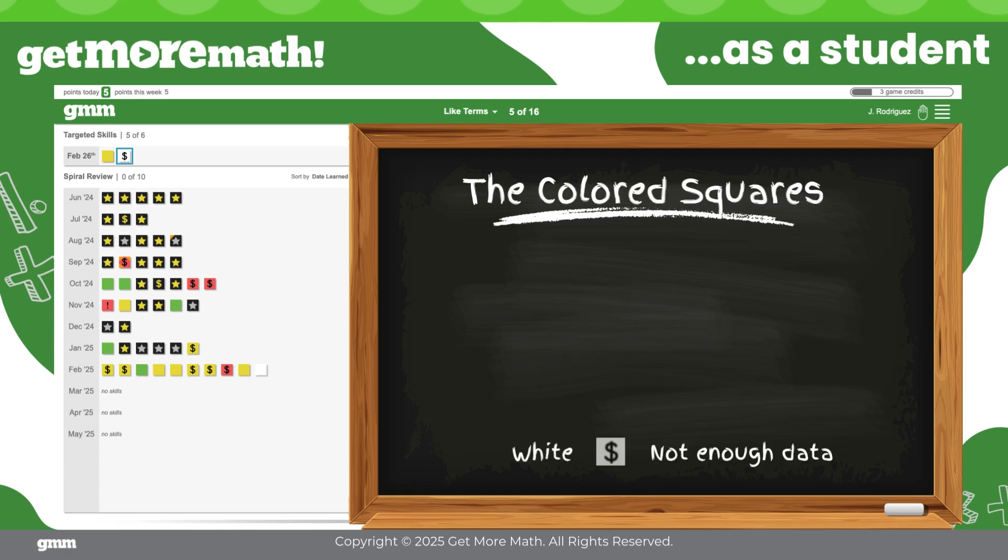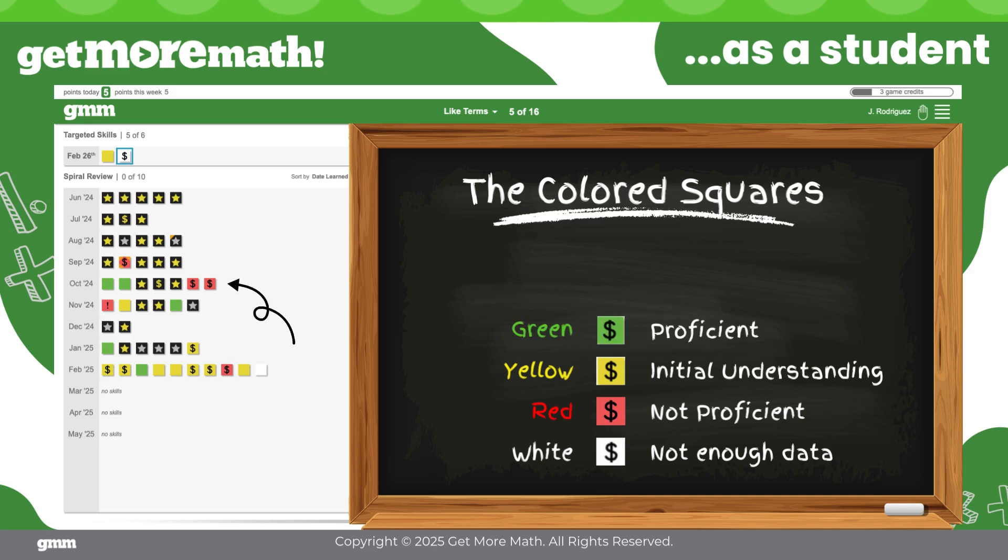White squares represent brand new skills and remain white until enough data is gathered to make a determination on the student's level of understanding. White squares will turn red if a student demonstrates no understanding. Teachers can quickly identify red squares to see which skills a student is struggling with most. Yellow signifies initial understanding, as shown earlier. Green skills are proficient. Skills turn green when students demonstrate understanding over multiple days or sessions. Silver and gold stars mark our highest proficiency levels, earned through weeks of successful practice and spiral review.